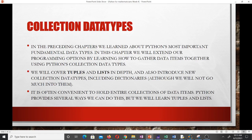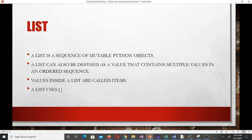In the preceding videos we learned about Python's most important fundamental data types: the string, the int, and so on. In this chapter we extend our programming options by learning how to gather data items together using Python's collection data types. We will cover tuples and lists in depth and also introduce dictionaries. It is often convenient to hold entire collections of data items and Python provides several ways we can do this.